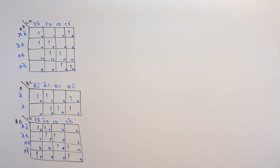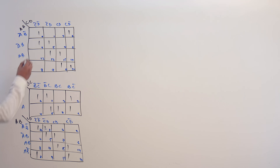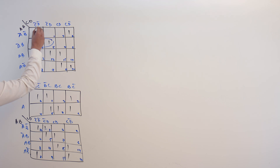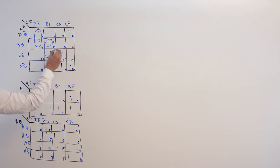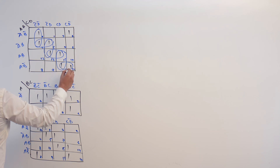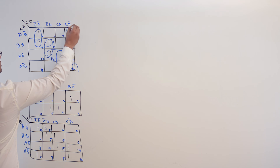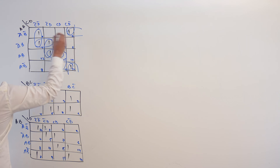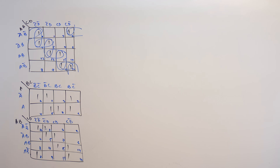Consider these K-maps. In this first K-map, what are the prime implicants we can have? There are multiple prime implicants visible here — this one, this one, this one, this one, as well as these.